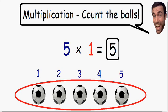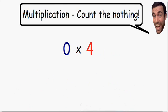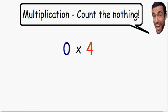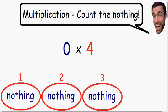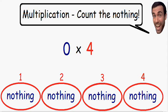So let's see what happens when we multiply by 0. Here we have 0 times 4. We're starting with the number 0, which means we have nothing — if you have 0 objects, you don't have any objects. And this number 0 needs to be multiplied 4 times. So let's multiply this nothing by 4. Now we have 1 times nothing, 2 times nothing, 3 times nothing, and now 4 times nothing. No matter how many times we multiply by 0, we're still going to have nothing.